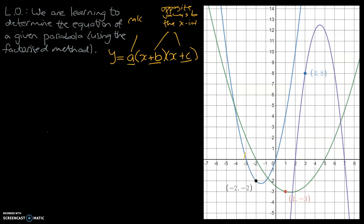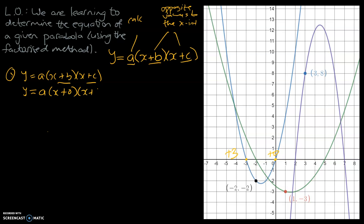Let's look at the blue graph — graph number one. Let's start off with our generic equation, as we always should: y = a(x plus b)(x plus c). First step, find our b and c values. The intercept at negative 3 means one value is going to be positive 3, and the opposite of 0 is 0. So we get x plus 0 and x plus 3. Since x plus 0 just comes to x, I'm going to simplify that: a times x times (x plus 3).